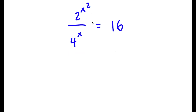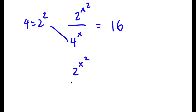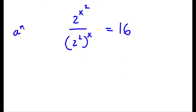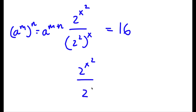Alright, so I have 2 to the power of x squared over 4 to the power of x is equal to 16. The first thing I'm going to do is change 4 to the power of x, because 4 is the same thing as 2 squared. So now, if I substitute in 2 squared for 4, I get 2 to the power of x squared over 2 to the power of 2 to the power of x is equal to 16. Using the rule a to the power of m to the power of n equals a to the power of m times n, 2 to the power of 2 to the power of x equals 2 to the power of 2 times x, which is simply 2x.